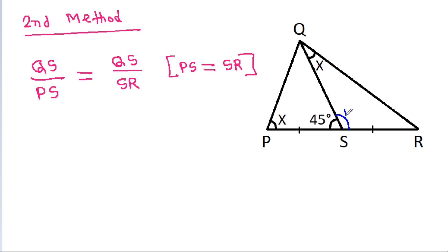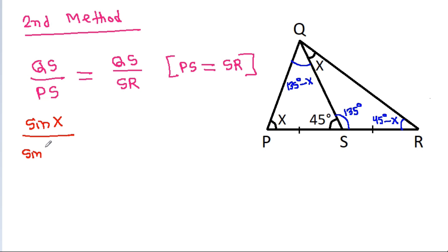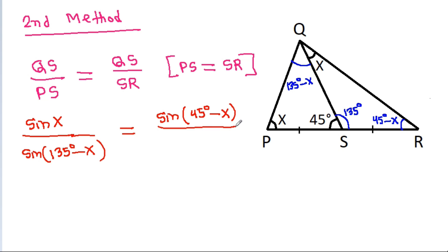So this angle will be 135 degrees, and since the sum of all angles in a triangle is 180 degrees, this angle will be 45 minus x, and another angle will be 135 minus x. So QS by PS will be equal to sin x by sin(135° − x), which further equals sin(45° − x) by sin x.